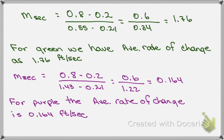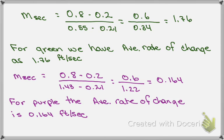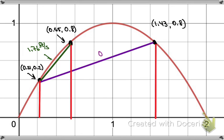And then if we look at the purple line, we have two different points. So the slope of that secant line would be 0.8 minus 0.2, still the difference in the y's are the same. But now in the times t, they're different because the projectile would have gone a little bit further to start coming down and get back to the 0.8 after it reached its maximum. So that would be 1.43 minus 0.21. If the arithmetic is correct, that's 1.22. Do that division, and there's an average rate of change now of 0.164 feet per second. And so the average rate of change of the purple line was 0.164, so that is 0.164 feet per second.